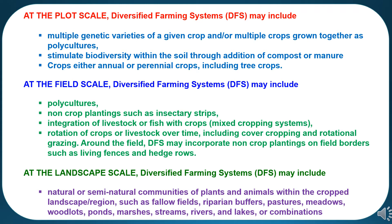At the field scale, diversified farming systems may include polyculture, non-crop plantings such as insectary strips, integration of livestock or fish culture with crops as part of mixed cropping systems, rotation of crops or livestock over time including cover cropping and rotational grazing. Around the field, diversified farming systems may incorporate non-crop plantings on field borders such as living fences and hedgerows.